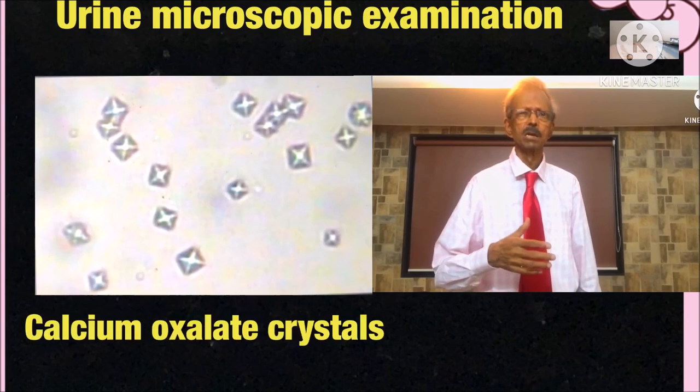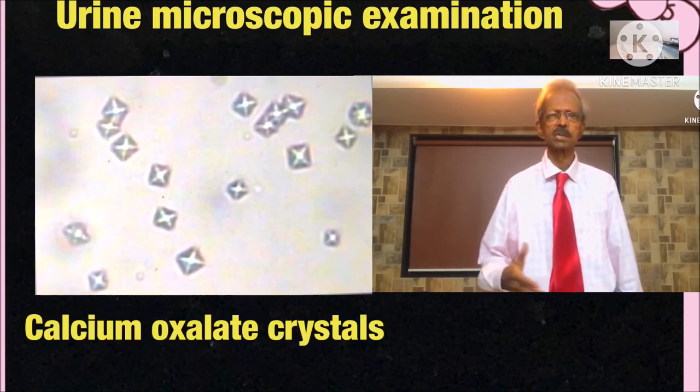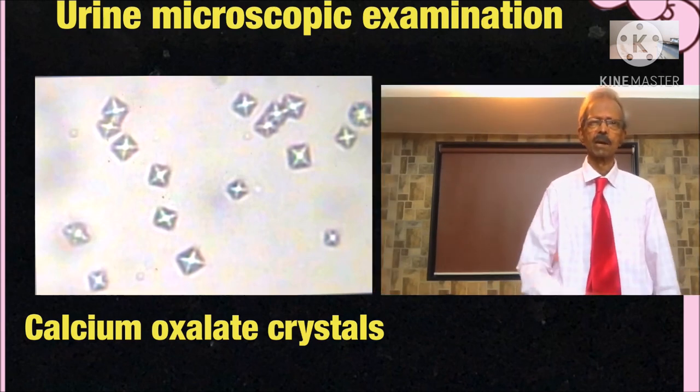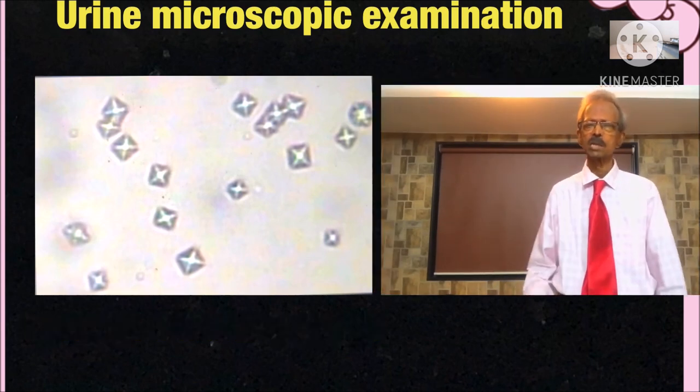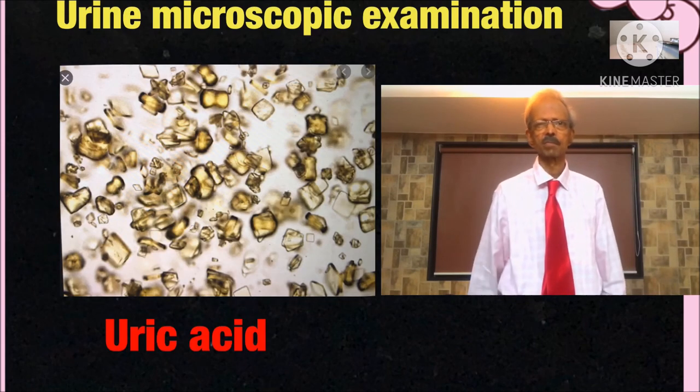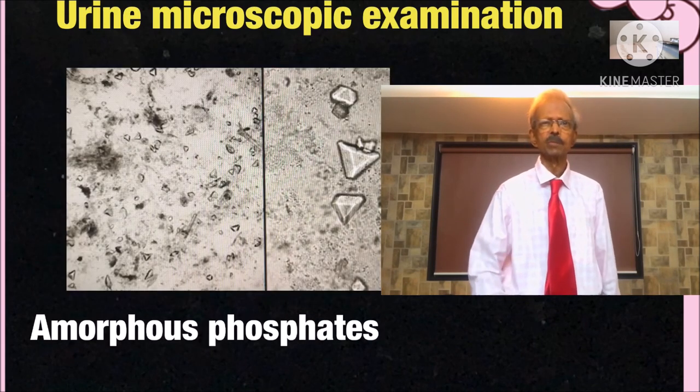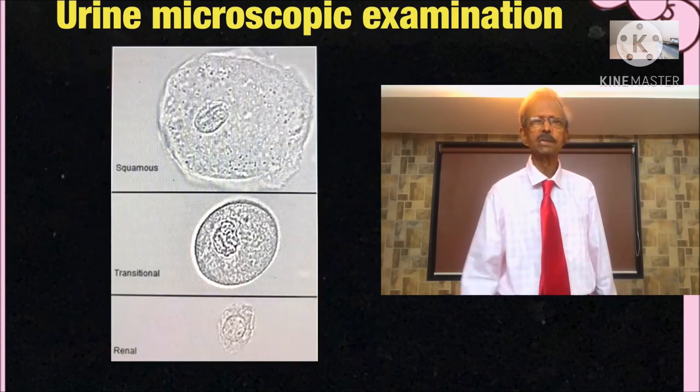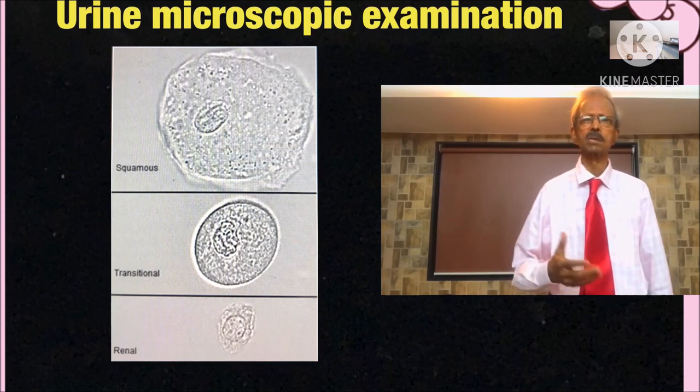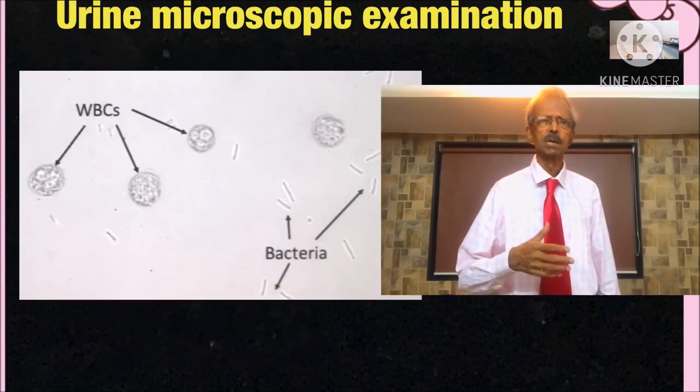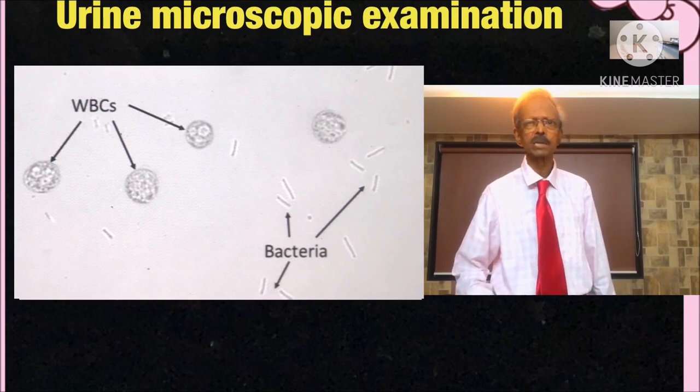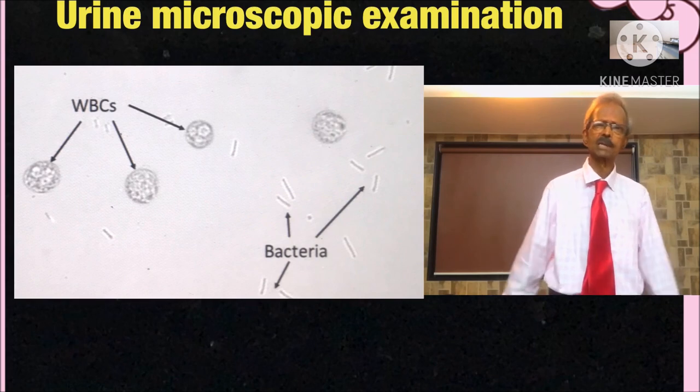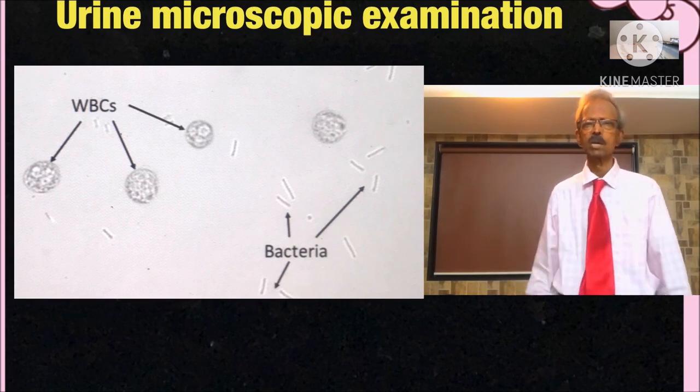Then in the case of renal calculus or calculi, you may see large number of these crystals: calcium oxalate, uric acid crystals and amorphous phosphates. Learn to differentiate squamous epithelial cells and transitional epithelial cells as shown on the left hand side. And bacteria may also be seen in urinary tract infection or if urine is stored at room temperature for very long period.